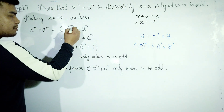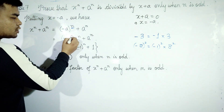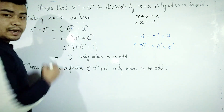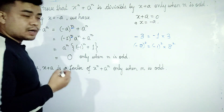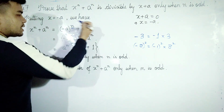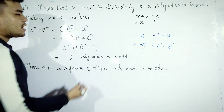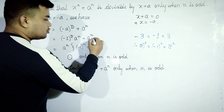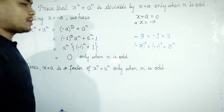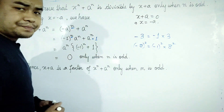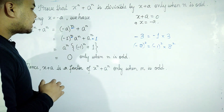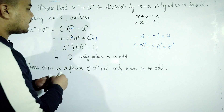Now, a to the power n is minus 1 to the power n times a to the power n. So we have minus 1 to the power n plus 1, times a to the power n.